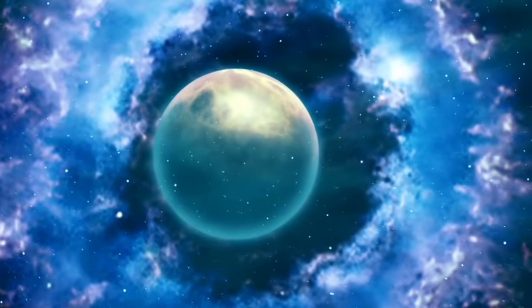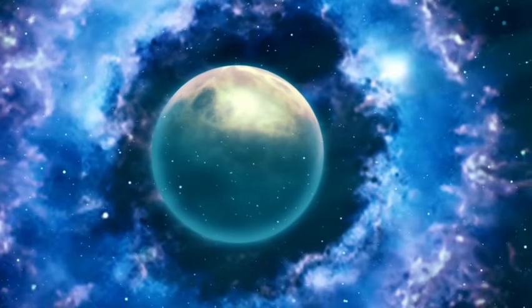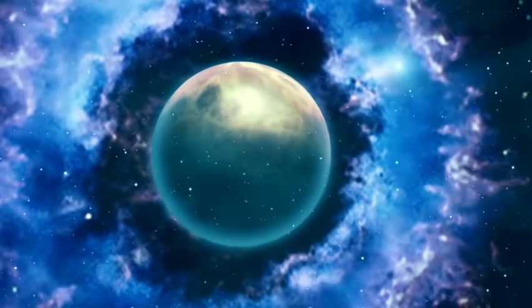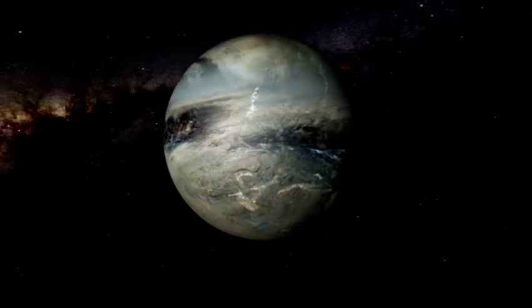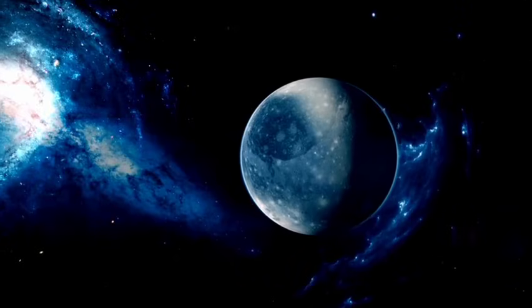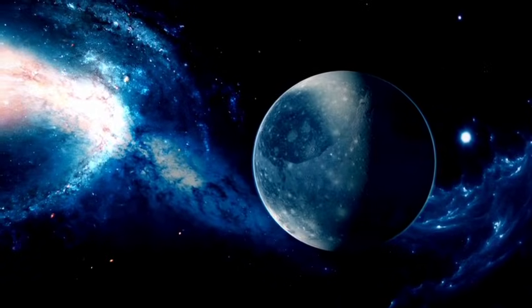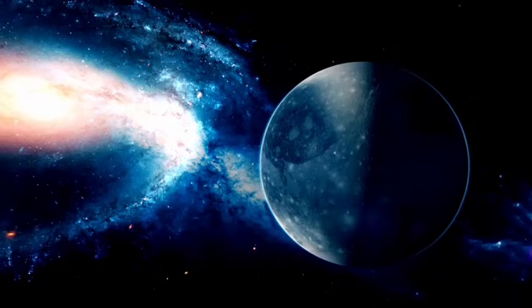Pluto's orbit, uniquely chaotic yet stable. Pluto's journey around the Sun is unlike that of any other planet in our solar system. It takes an astonishing 248 years to complete a single orbit and since its discovery in 1930, it hasn't even completed one full revolution.